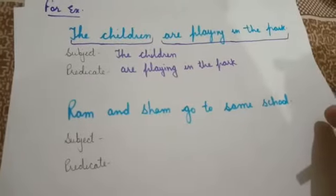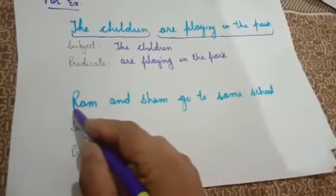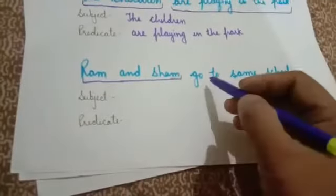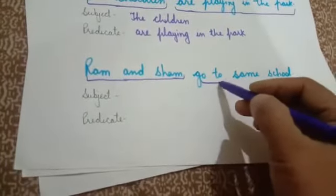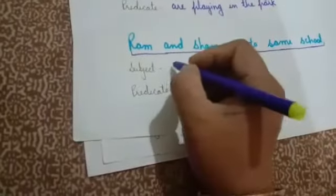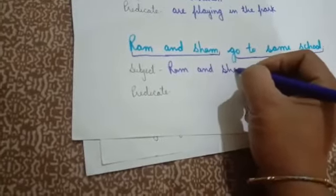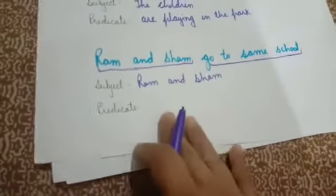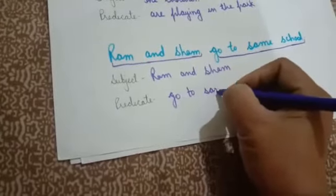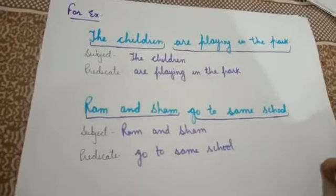Next one: 'Ram and Shyam go to same school.' Here we are talking about Ram and Shyam — that is the noun here. And what is the action? Going to school. So 'Ram and Shyam' is the subject, and the rest of the part of the sentence is the predicate.